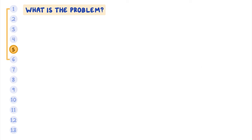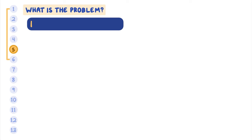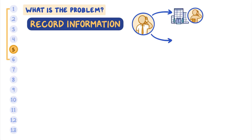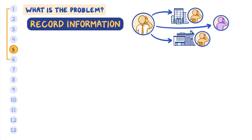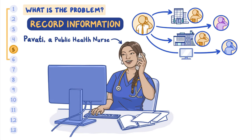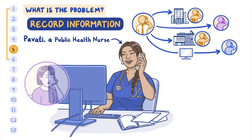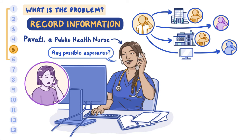Using that case definition, the team can systematically search for more cases and record information about them. The team can contact physicians, laboratories, and sick people to ask for case information. At some point they may also reach out to potentially ill persons through the media or other records. Pivati, a public health nurse, may contact persons identified as confirmed or suspected cases. Pivati would ask questions about possible exposures, such as places they have recently visited, foods they have recently eaten, and whether they know anyone else who is sick.